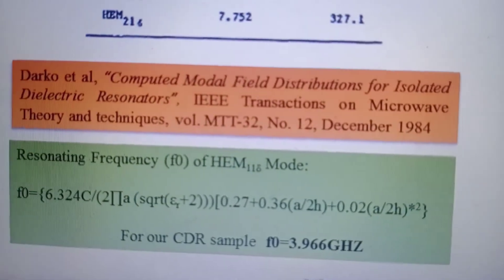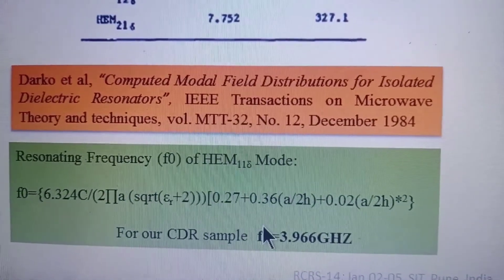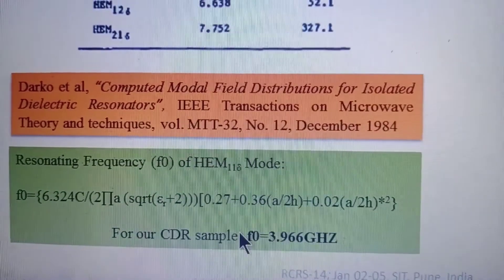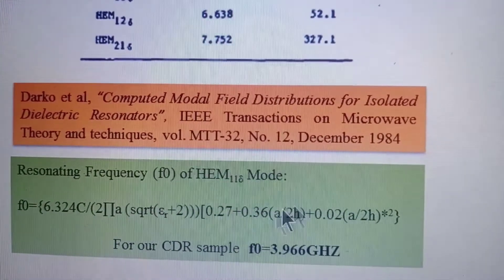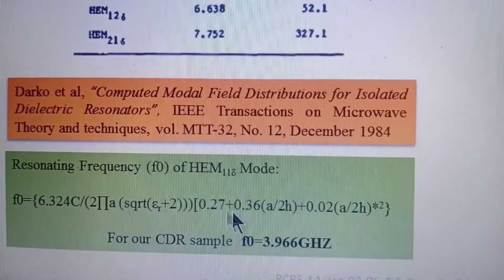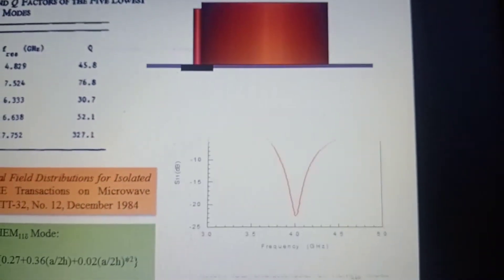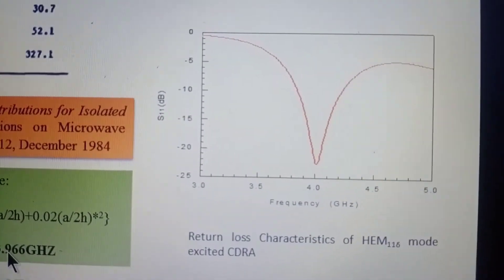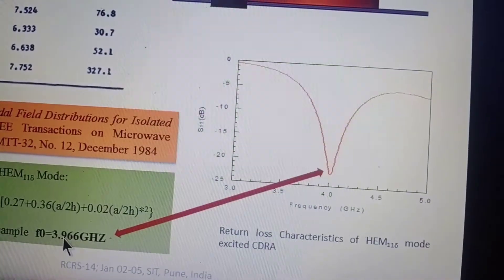As per the formula, we have used epsilon r of 10, height is 10, and radius is 10. For that, if I substitute in this formula, I got 3.966 gigahertz resonant frequency. This is our configuration and this is our resonance.